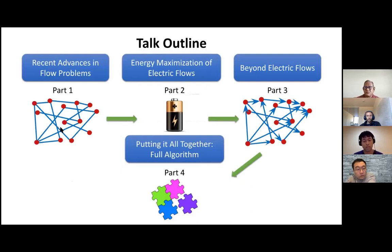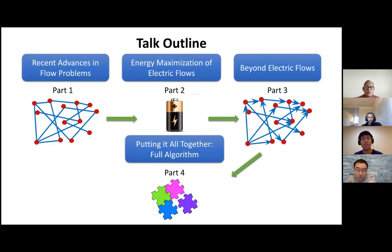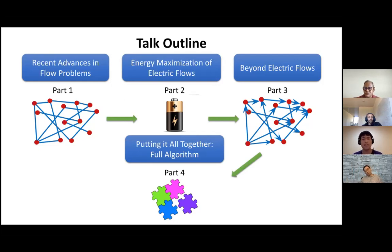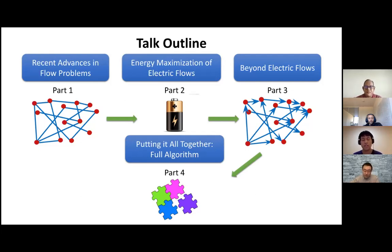To give the outline for the talk: first, I'm going to describe recent advances towards flow problems of all kinds, not just maximum flow, to give the setting for our improvement and how other flow results interact with our result. Then I'm going to give the two main conceptual ideas behind our improvements — energy maximization and a way to go beyond electric flows. Finally, I'm going to try to put everything together to give a full algorithm.